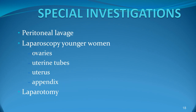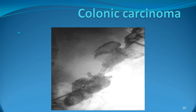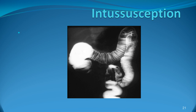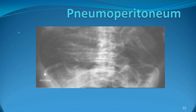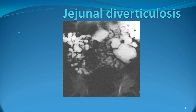Special investigations: peritoneal lavage in certain conditions, laparoscopy in younger women to diagnose ovarian, uterine tube, appendicular pathology and uterine conditions, or laparotomy could be performed if the condition signifies. A CT scan shows anterior displacement of the right kidney. An X-ray shows an apple core appearance in colonic carcinoma. Intussusception and pneumoperitoneum signifying perforation of a viscus, and classical volvulus can also be seen. This small bowel series shows jejunal diverticulosis.